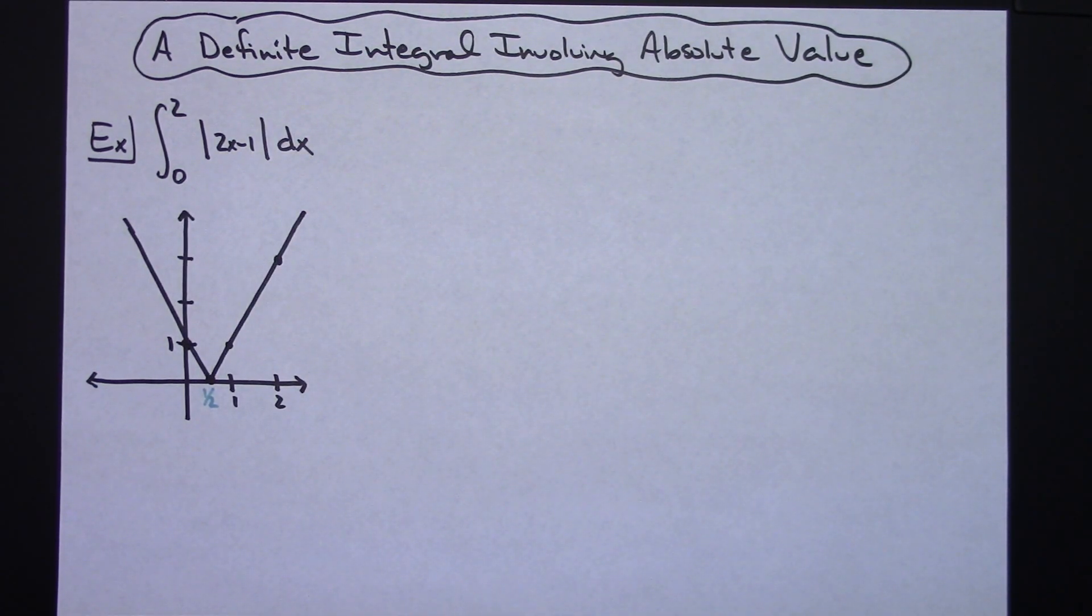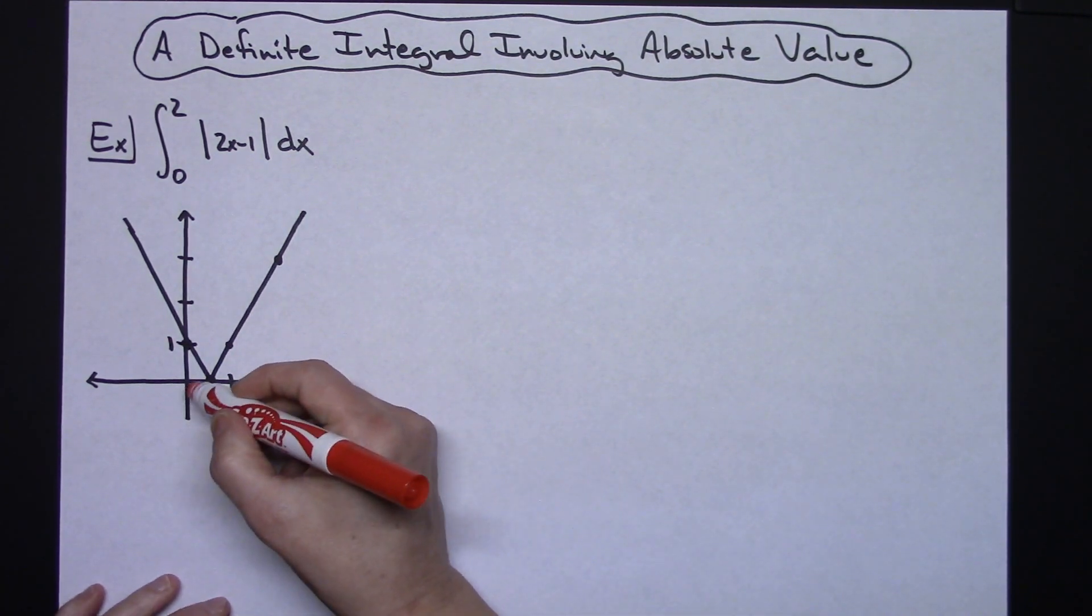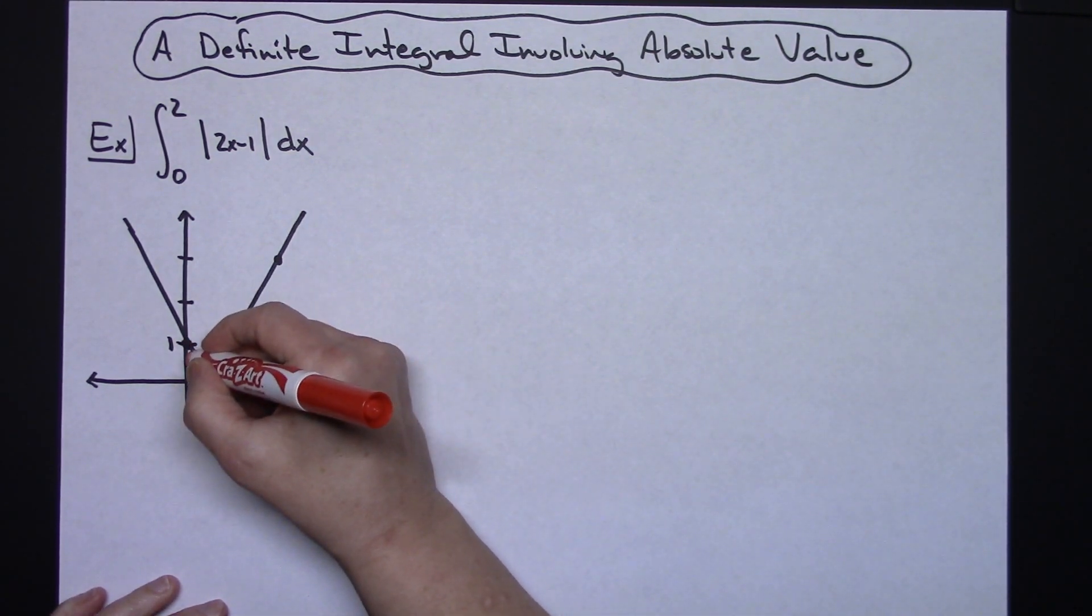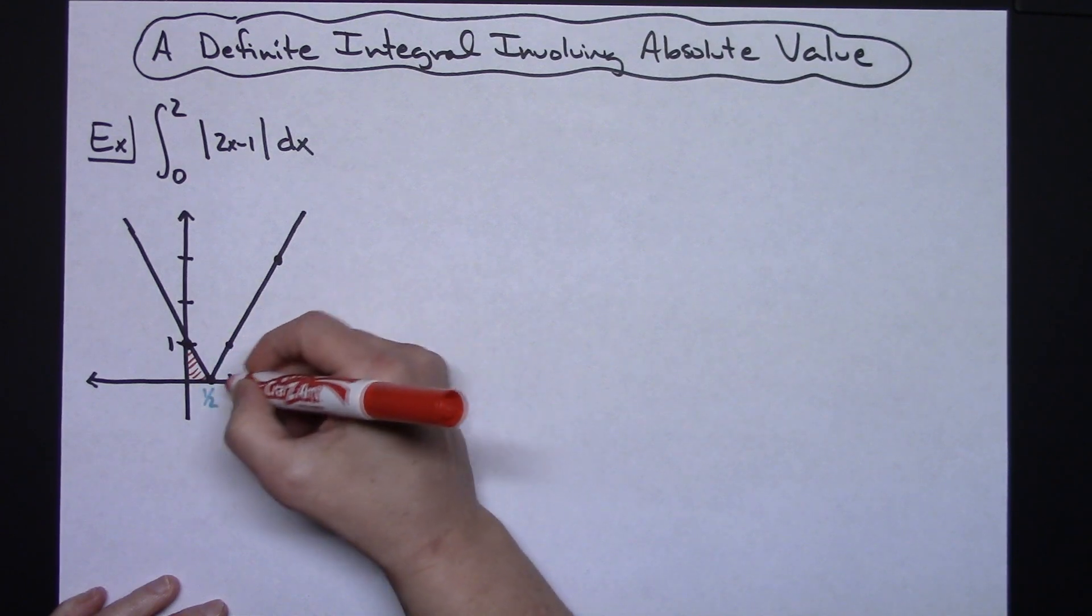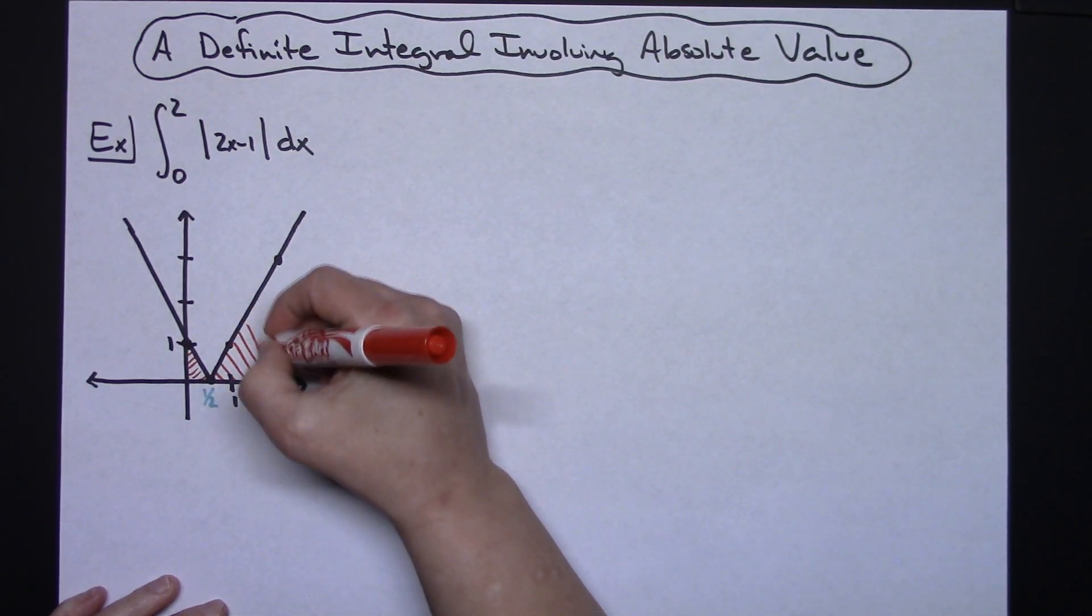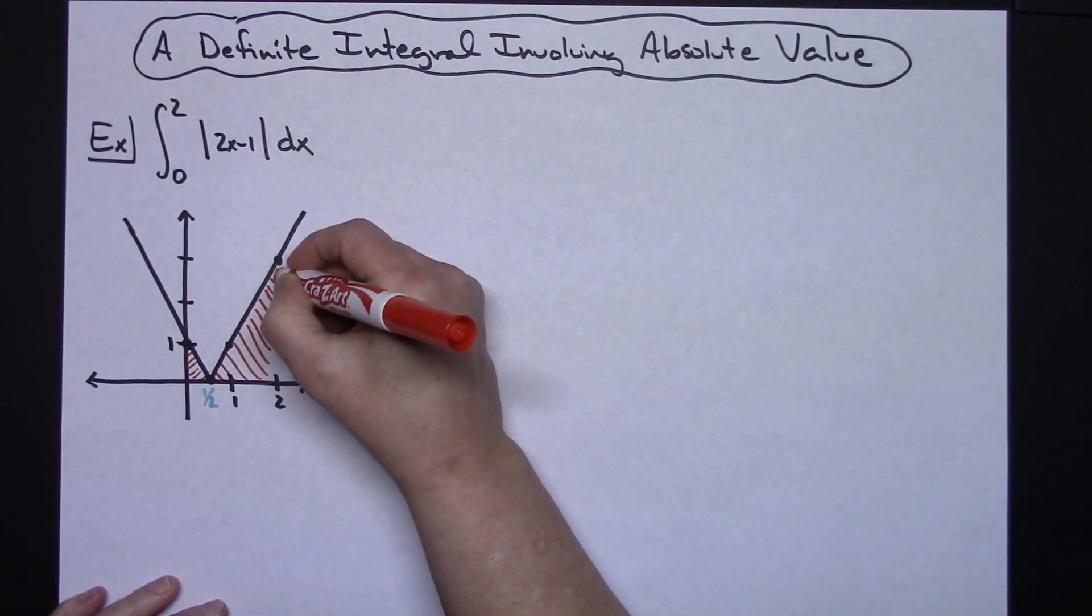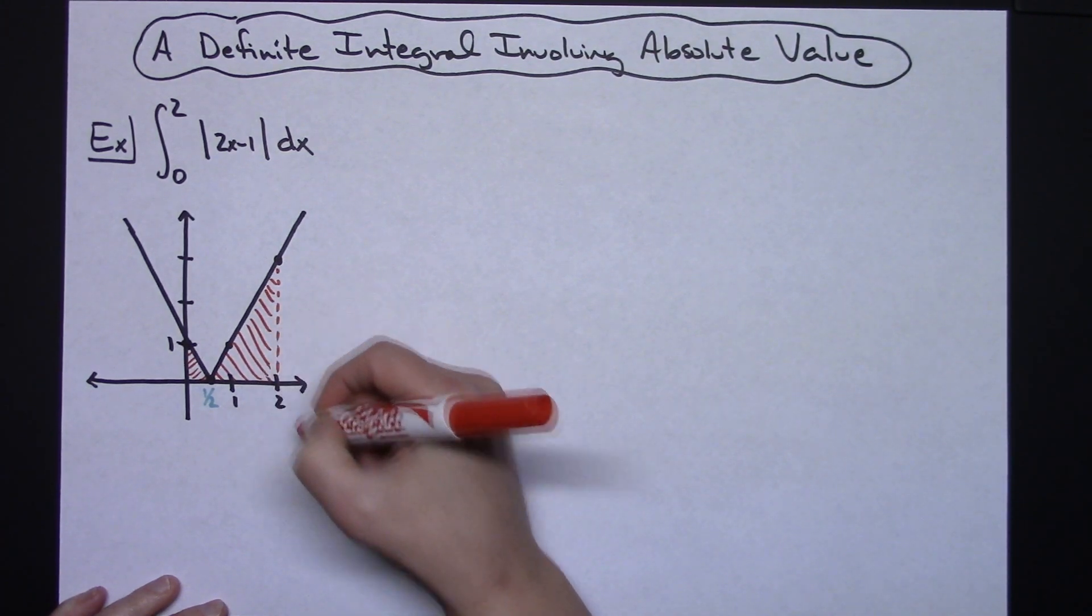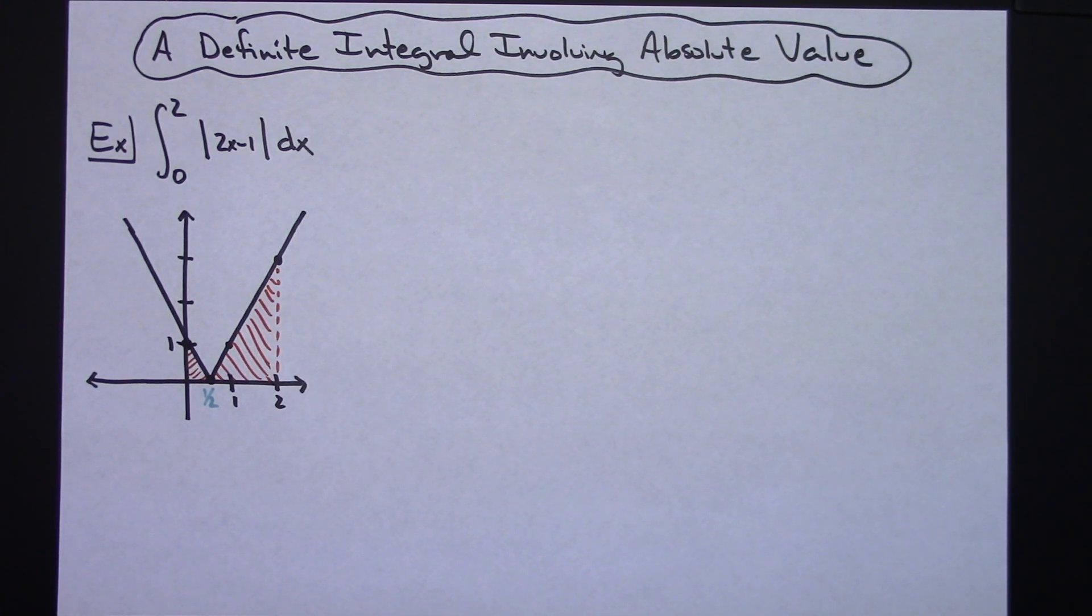Now I am trying to integrate from 0 to 2. So there's 0 to 2. So I'm looking at the area under the curve from 0 to 2 there. Let's do that. There we go. So that's what I'm trying to calculate by this integral.